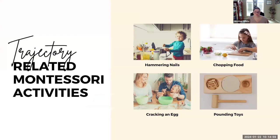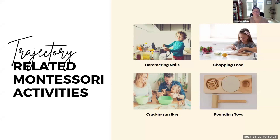If a child is in the trajectory schema, some things they might enjoy are hammering nails, chopping food, cracking an egg, and pounding toys. A fun example is using clay with a hammer, or around October or November using golf tees and a pumpkin — the child hammers the golf tees into the pumpkin, giving them that input to hone their gross motor skills and learn about cause and effect.